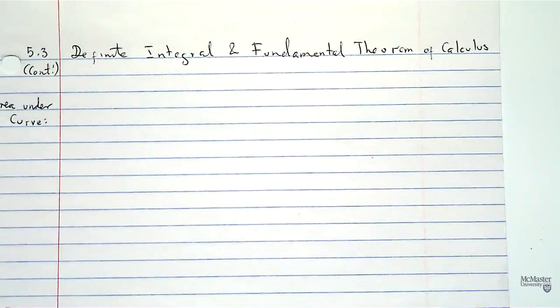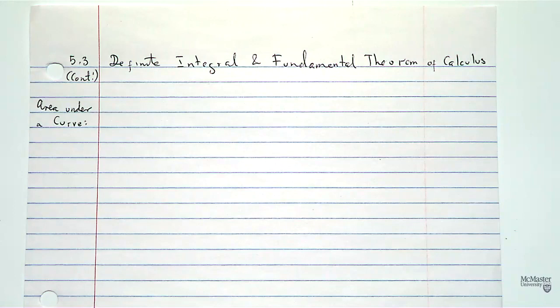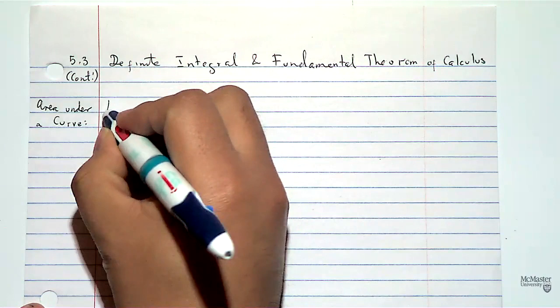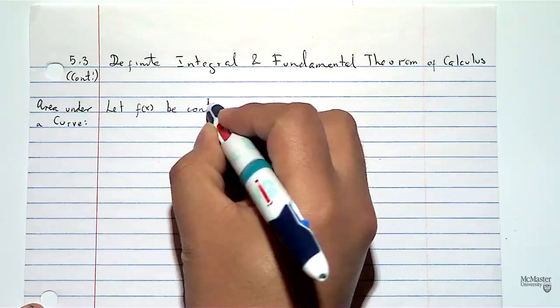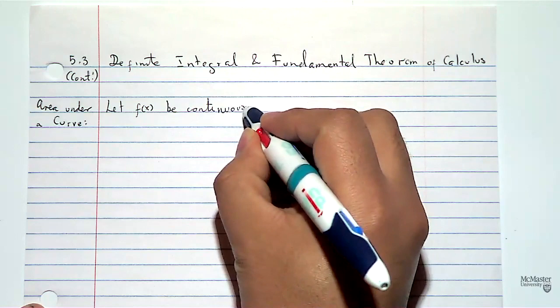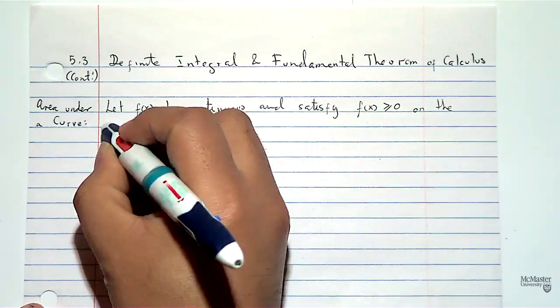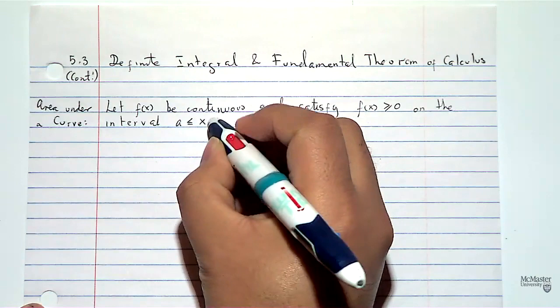Last class, we started discussing the concept of definite integral, some motivation related to the area under the curve, and so on. We'll continue in that section. There was one last thing we had to mention to make the definition precise. So let f of x be continuous and satisfy f of x greater or equal to 0 — so it's non-negative — on the interval [a, b], where x is between a and b.